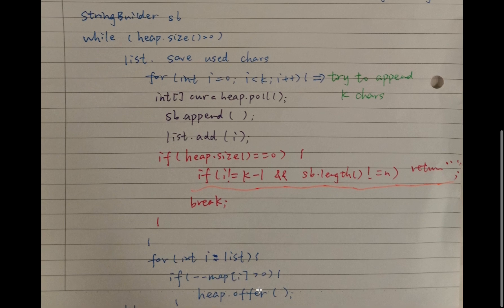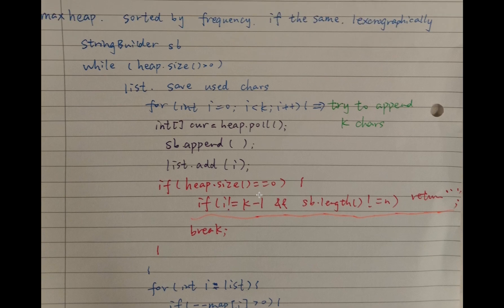After the for loop, we check whether we have unused characters and re-offer them into the heap. For example, if 'a' had a frequency of 2, in the for loop we append it once, but we still have one 'a' unused. So if we decrement its frequency and it is still greater than zero, we re-offer it into the heap. Every time the heap size equals zero, we check two valid cases: either i equals k minus 1 (meaning we reached the end), or the string builder length equals the string length (meaning we appended all characters). If neither is true, we return empty string because we don't have enough characters. Otherwise we break.